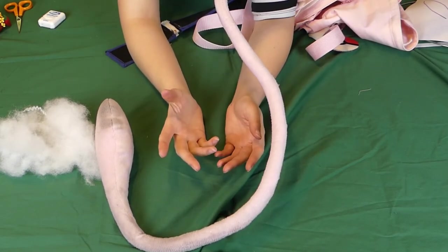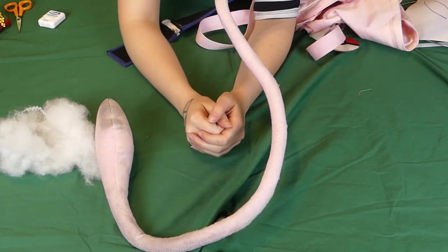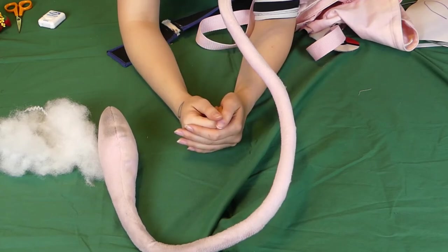If you have a thicker tail or a shorter tail, you might not need to do that. You might be able to just sew the whole thing and then easily stuff it. This was a particular challenge just because of its length and how narrow it is.